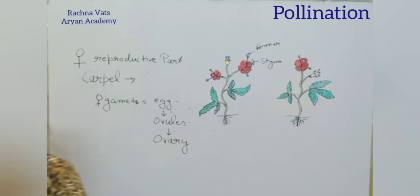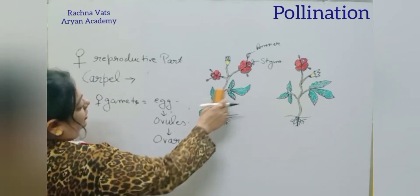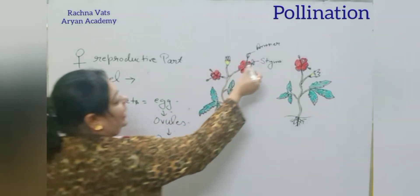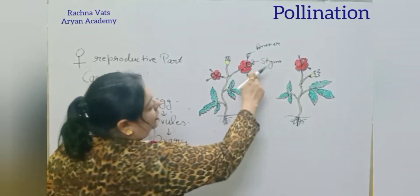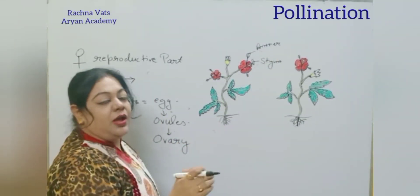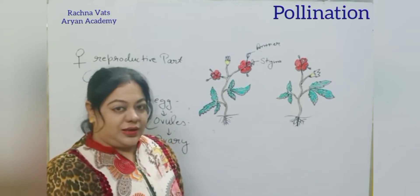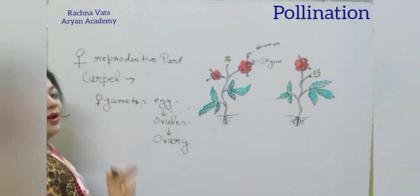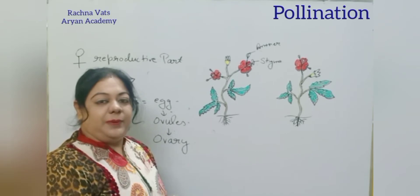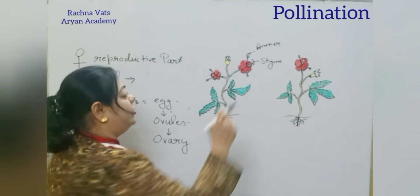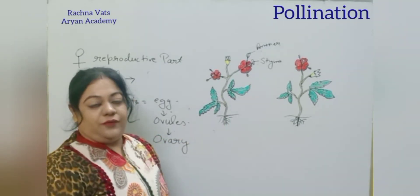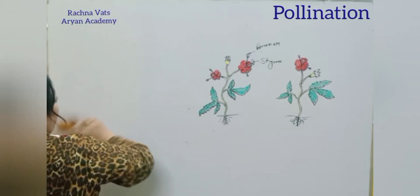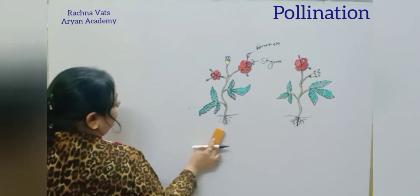Because the male gamete has to transfer towards the female gamete for fertilization to occur, the transfer of pollen grains has to take place to the stigma of the female part. And that is known as pollination.